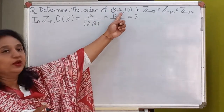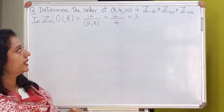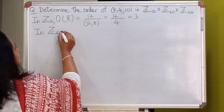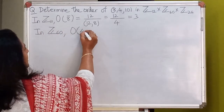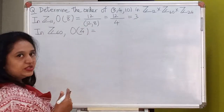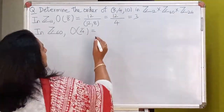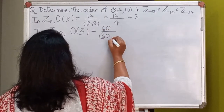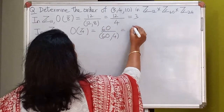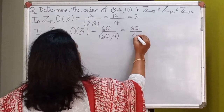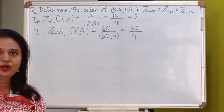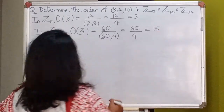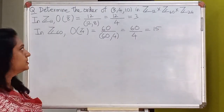Likewise, let us find out the order of the second element in the second group, that is Z60. In Z60, the order of 4-bar will be 60 divided by gcd(60, 4). And gcd(60, 4) is 4. So 60 divided by 4 gives me 15. So the order of 4-bar is 15.